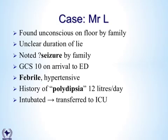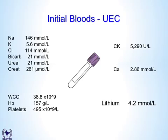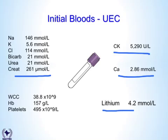He required intubation and transfer to the intensive care unit. His admission bloods showed really high urea and creatinine, an elevated CK due to rhabdomyolysis on his right buttock, hypercalcemia which turned out to be hyperparathyroidism, and a very high lithium level. Review of his outpatient notes showed he had been maintained with a high lithium level of at least 1.5 for a few months.